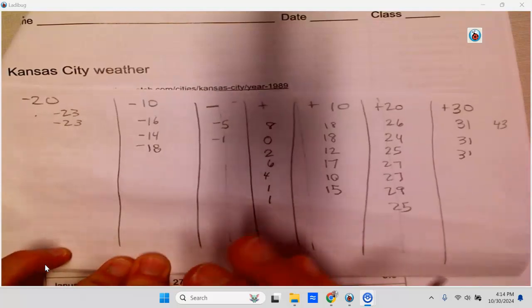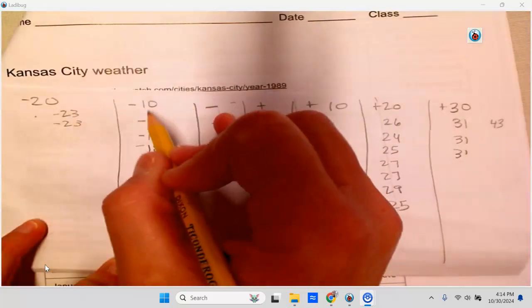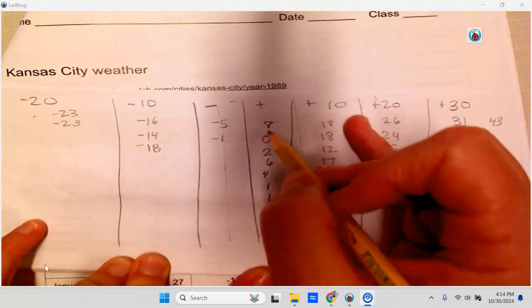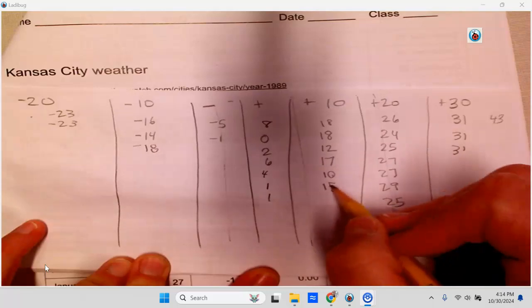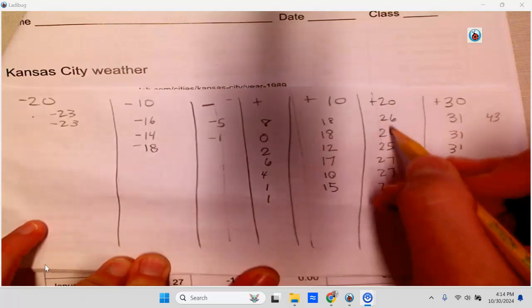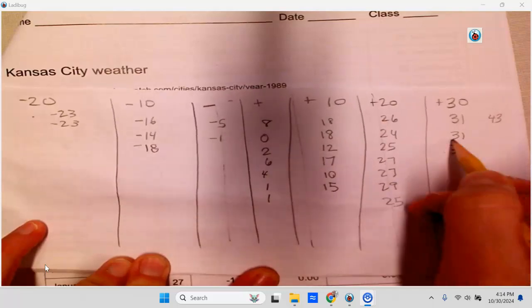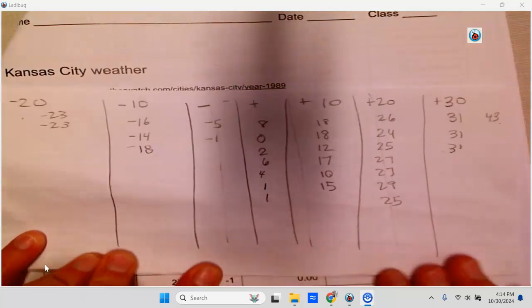Now I'm going to go through and count to make sure I have 31 numbers here. 1, 2, 3, 4, 5, 6, 7, 8, 9, 10, 11, 12, 13, 14, 15, 16, 17, 18, 19, 21. Okay, I have all my numbers.